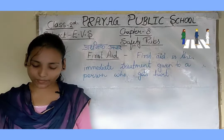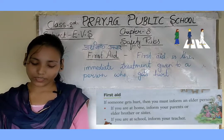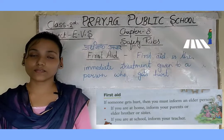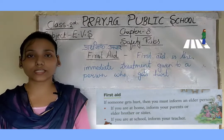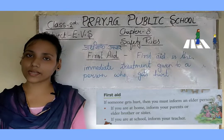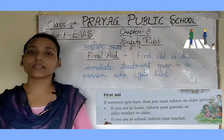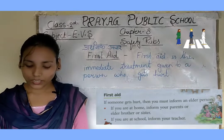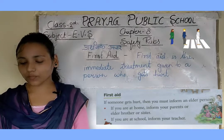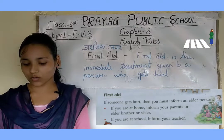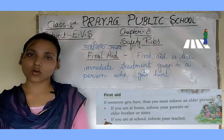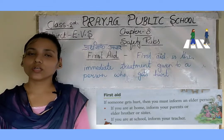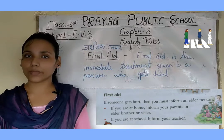Students, open your book and see page number 42. First aid — if someone gets hurt, then you must inform an elder person. If you are at home, inform your parents or elder brother or sister. Agar aap ghar mein ho aur aapko chot lag gayi ho, toh aap apne parents ya bade bhai-behen ko inform karoge.